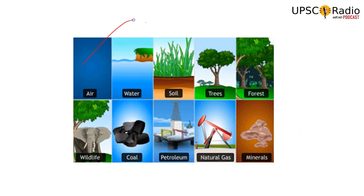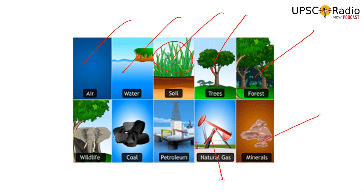Air is a resource, water is a resource, soil, trees, forest, group of trees, agriculture resources, minerals, natural gas, petroleum. Petrol is a refined product — crude oil is processed into petrol, diesel, kerosene, naphthalene balls, vaseline. You can even produce coal. Wildlife and humans are also resources.